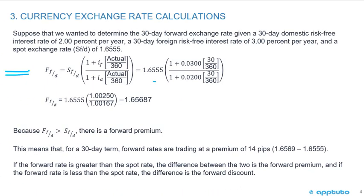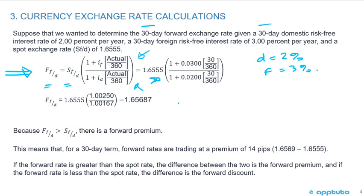Let's work through a forward rate calculation. Suppose we want to determine the 30-day forward exchange rate, given a domestic risk-free rate of 2% and a foreign rate of 3% per year. The spot rate is 1.6555. Our formula is: forward rate equals spot rate times one plus the foreign interest rate times (days/360), divided by one plus the domestic interest rate times (days/360). In the numerator we use the 3% foreign rate and in the denominator the 2% domestic rate — this is the F over D convention.